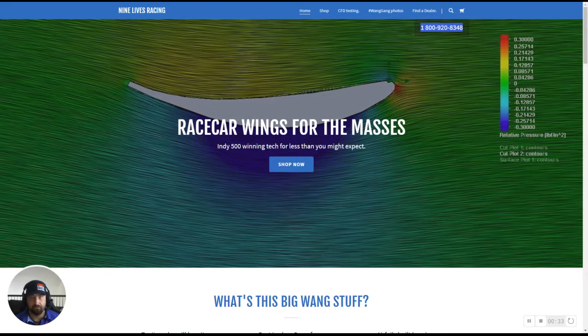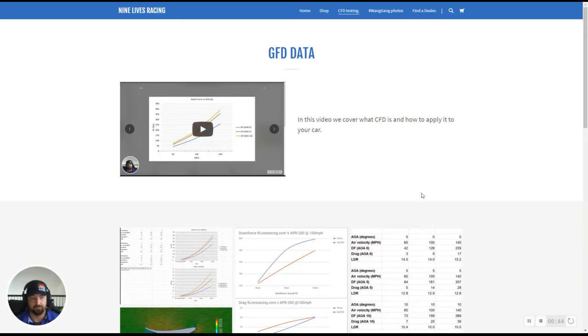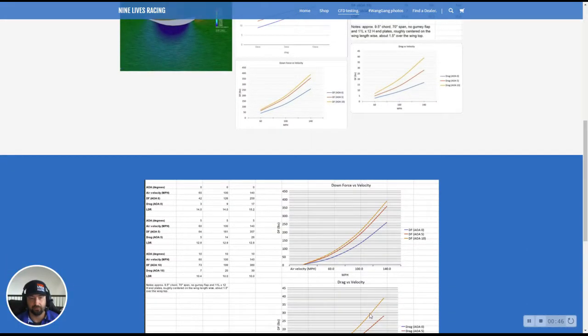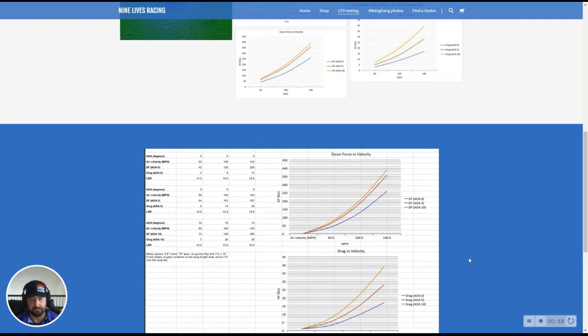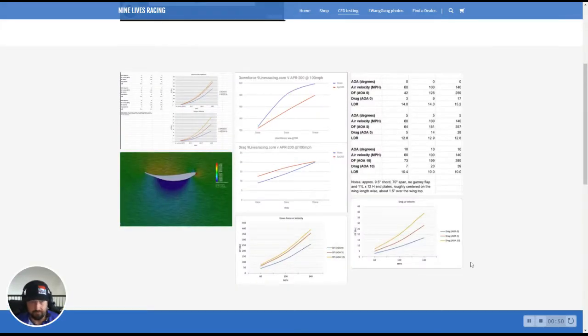So first things first, we're going to go over to the CFD testing page right here. We're on the 9Lives Racing page. You're going to click right up here on CFD testing and there's a video of us right here, the charts, some squiggly lines. What does this all mean? First things first, we're going to go right to, let's do this guy.